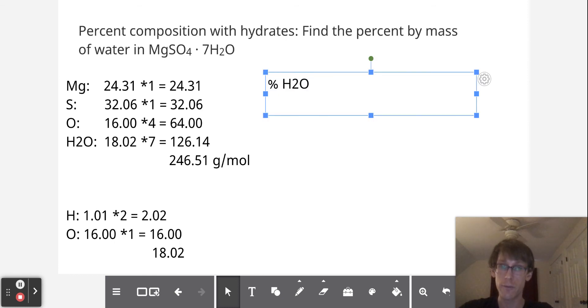In fact, the percent H2O is going to be equal to 126.14 divided by 246.51 times 100%, which is equal to 51.17%. So 51.17% of the Epsom salt that you buy at your local pharmacy is actually just paying for water.